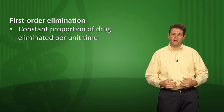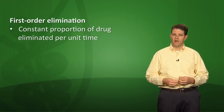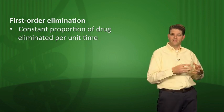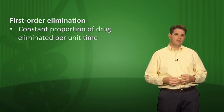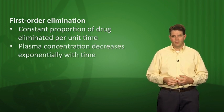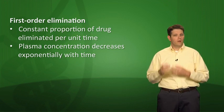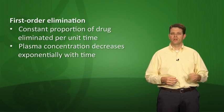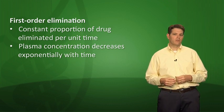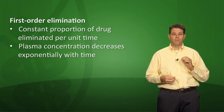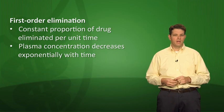First-order elimination is where a constant proportion or percentage of the drug is eliminated per unit of time. Zero-order eliminates a constant amount per hour, but first-order eliminates a constant percentage per hour. This means the plasma concentration decreases not linearly but exponentially with time. Instead of a constant 25 mg/hour, you might clear 50% of the drug every hour — the absolute amount varies but the proportion eliminated is always the same.